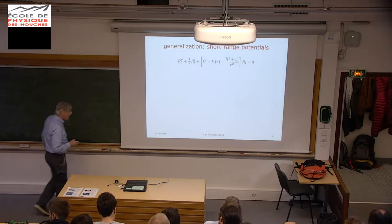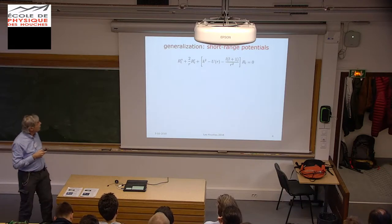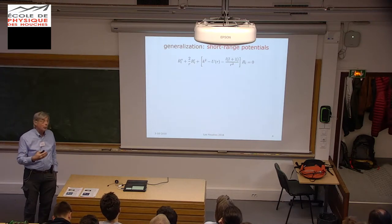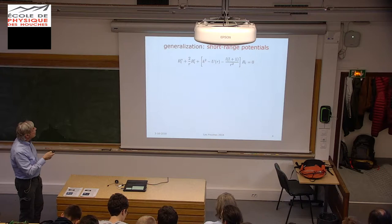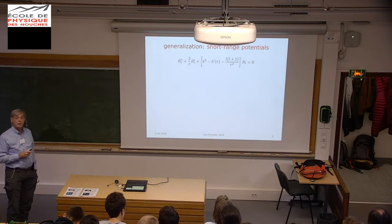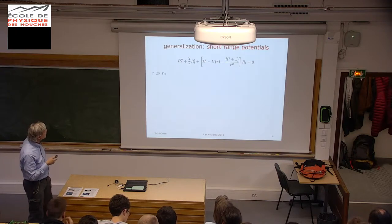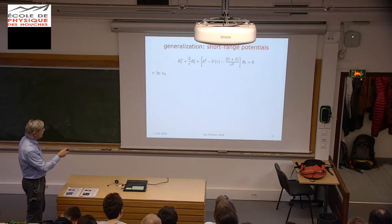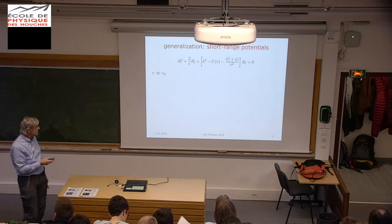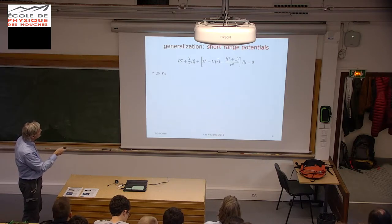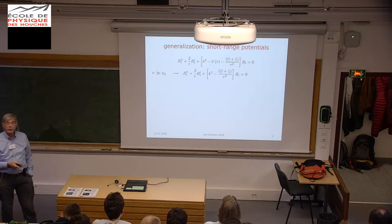What we did in our example, we looked in great detail at the square well. And now the important thing to realize is that the method we applied has much more general validity. You can express this as a generalization to short-range potentials where you only assume that a range exists but do not specify the particular shape. You can look at this equation knowing that the potential is short-range and falls off rapidly. So if you look at values of R much larger than the range of the interaction, the potential drops out and you get the spherical Bessel equation.